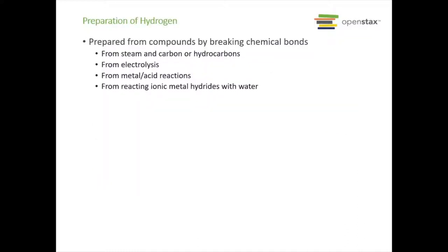There are a few different ways of getting hydrogen, but basically all of them require us to break chemical bonds. We might use steam and carbon or hydrocarbons, electrolysis, acid-metal reactions, or reacting ionic metal hydrides with water.